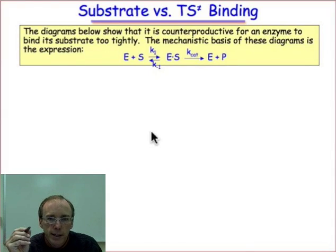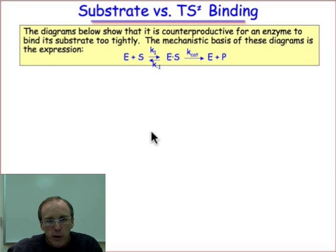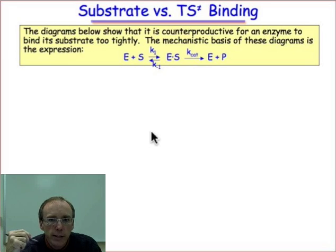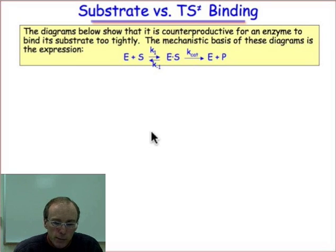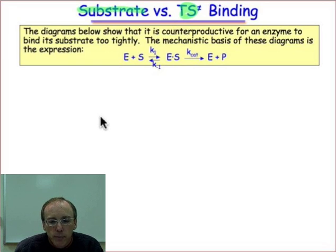Here we want to learn how it is that an enzyme is able to achieve its remarkable rate enhancement. Imagine a reaction taking place along a reaction pathway. The first question we want to ask is: where should the enzyme impart the greatest stability along that reaction pathway? Should it, for example, bring stability to the transition state structure, or should it try to more tightly bind the substrate?